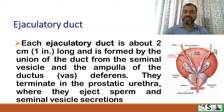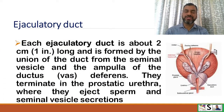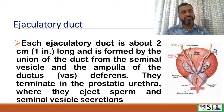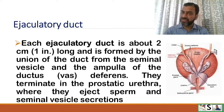Each ejaculatory duct is about 2 cm long and is formed by the union of the duct from the seminal vesicle and the ampulla of the ductus deferens. They terminate in the prostatic urethra, where they eject sperm and seminal vesicle secretions.